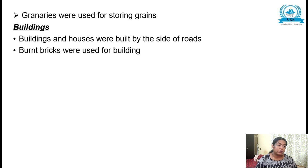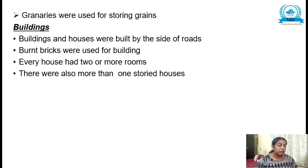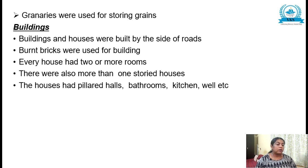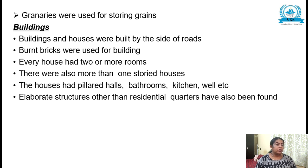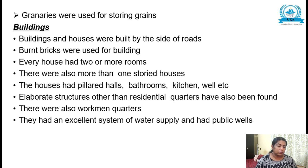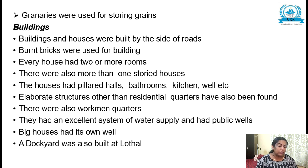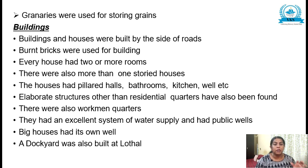Next, buildings — buildings and houses were built on the sides of the road. Burnt bricks were used; every house had two or more rooms, and there were also more than one-storied houses. The houses had pillared halls, bathrooms, kitchens, and wells. Elaborate structures other than residential quarters have been found, including workmen's quarters. They had an excellent system of water supply with public wells, and a dockyard was also built at Lothal.